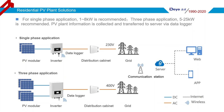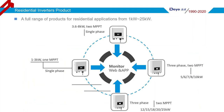For the single-phase model, we have 2 series: 1 MPPT for 1-3 KW, and 2 MPPT for 3.6-8 KW. For the 3-phase model, we have 5, 6, 7, 8, 10 KW and 12, 15, 18, 20, 25 KW models, all with 2 MPPT.